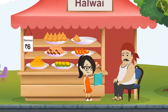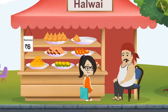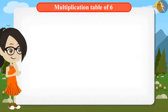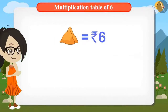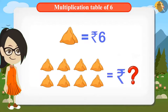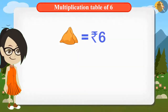"One samosa is for six rupees. At the rate of six rupees per samosa, calculate and give the money for eight samosas." Vandana is trying to find out the cost of eight samosas if one samosa costs six rupees. Will you help Vandana find the total cost?